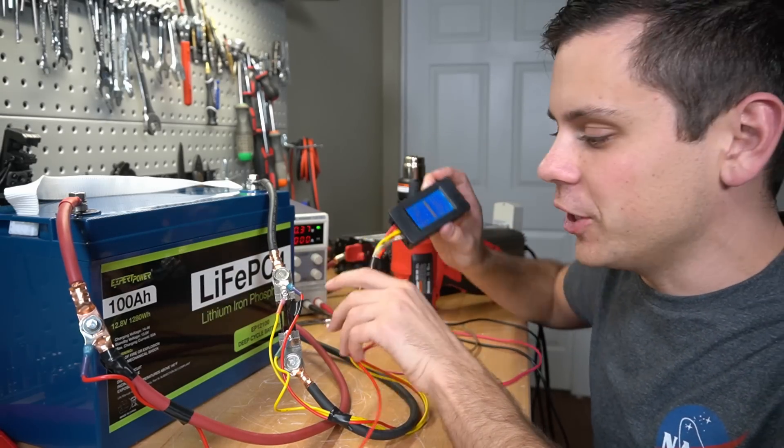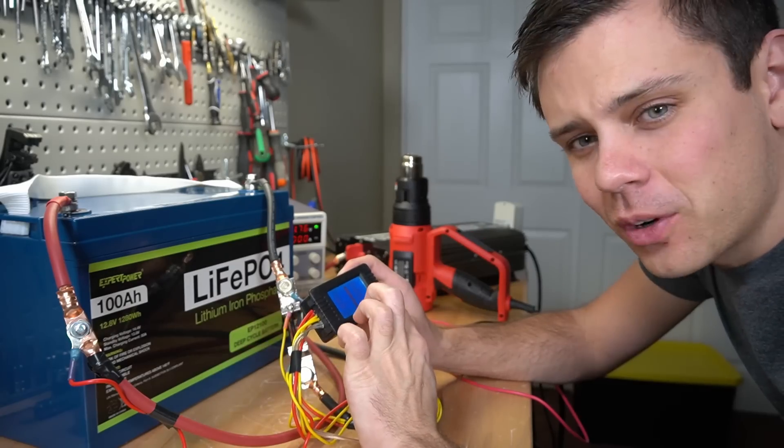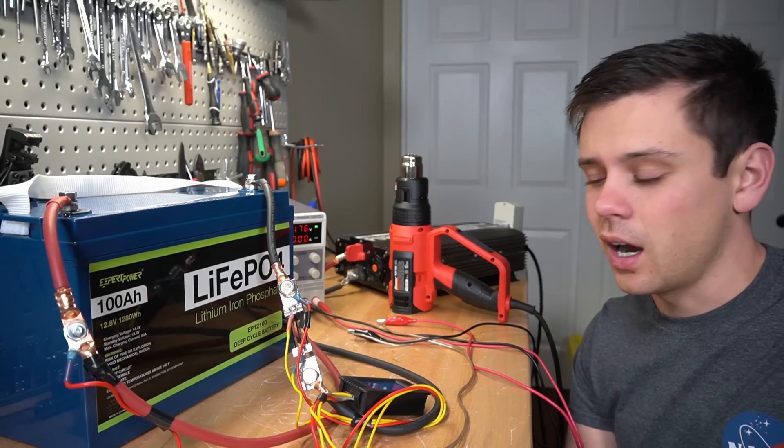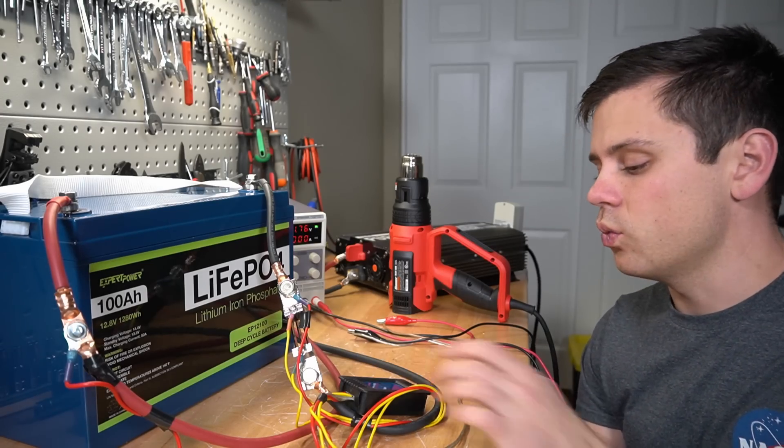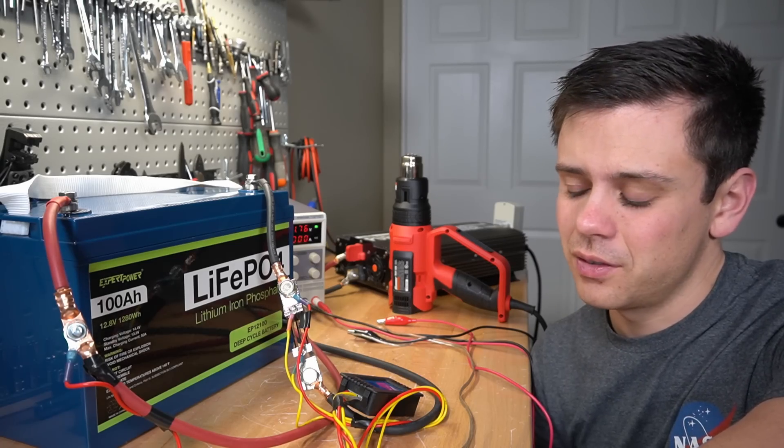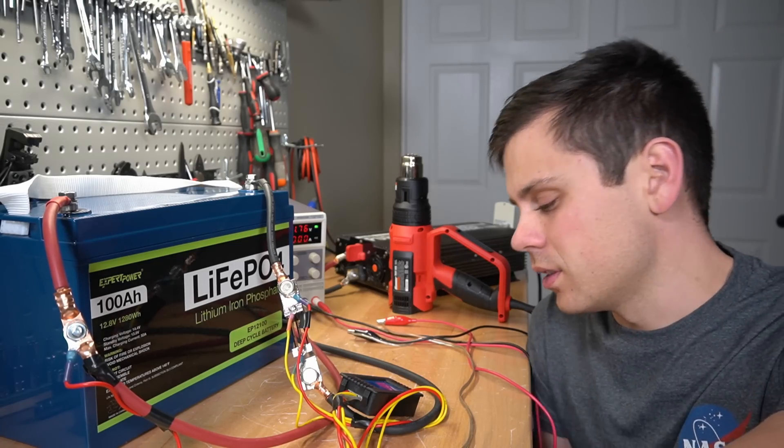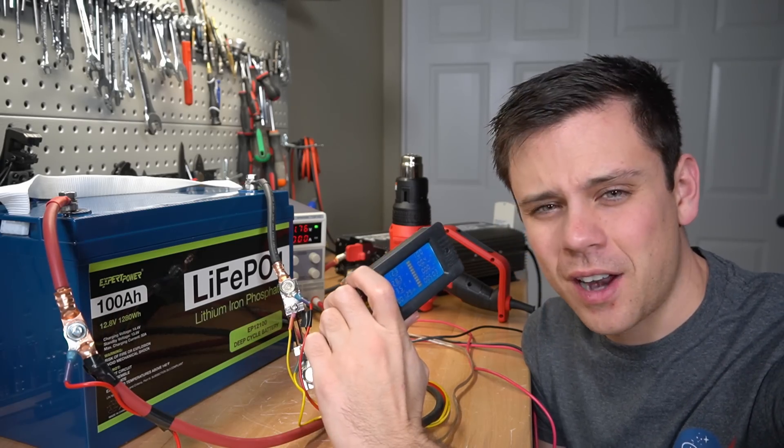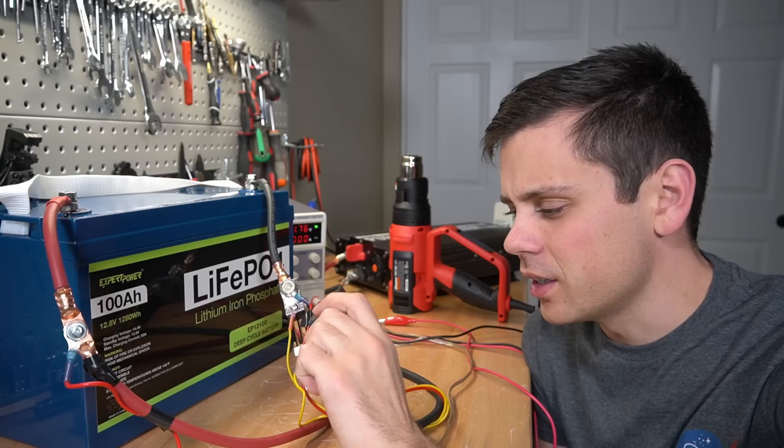Now we're pulling 20 amps for the capacity test. We're going to run this until it dies. It's been five hours and we're at 99 amp hours. It's almost there. I've been doing this test way too long. It's like one o'clock in the morning and I feel like death. I should not be doing these tests this late at night. We passed 100 amp hours and the test is almost done.